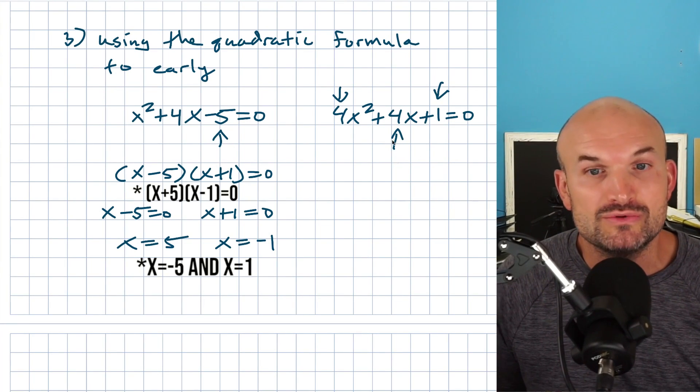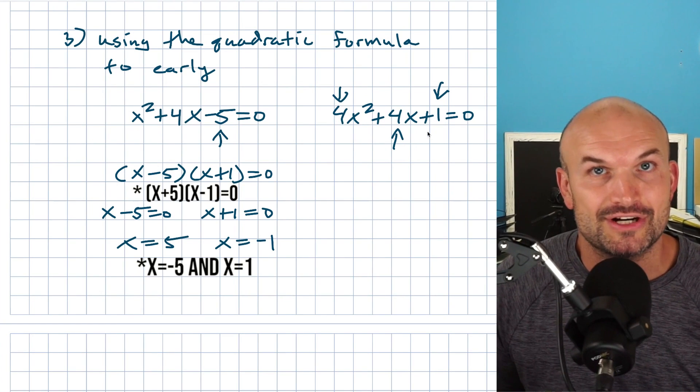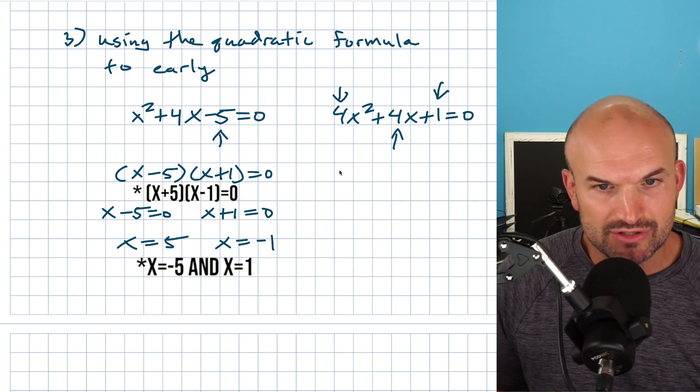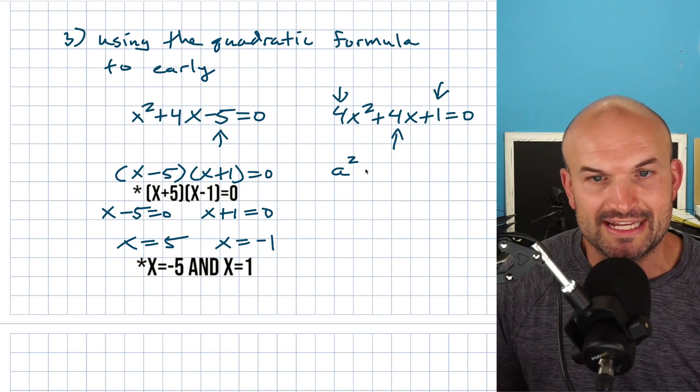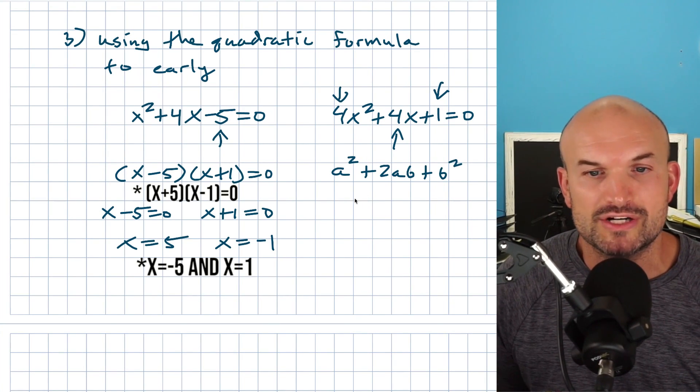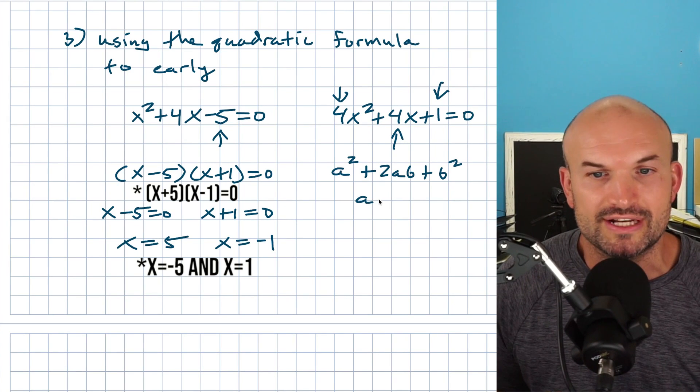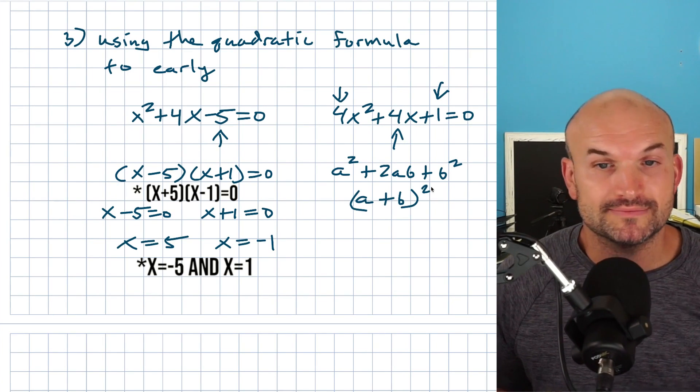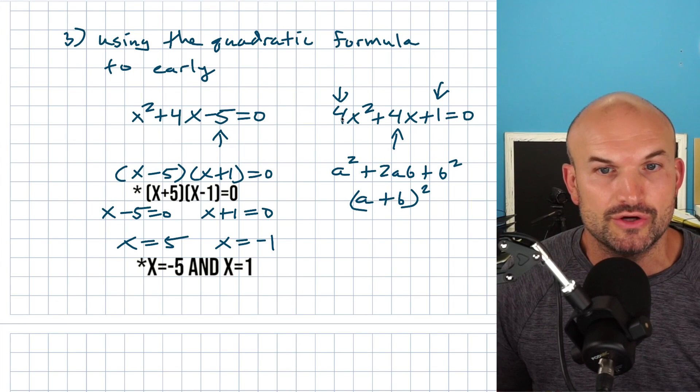What you want to do is check your middle term. If your middle term is two times the square root of your first and last term, then you have what we call a perfect square trinomial. So just kind of algebraically show that to you. If I have a squared plus two AB plus B squared, that's a perfect square trinomial, which can be broken down or factored into an A plus B quantity squared.